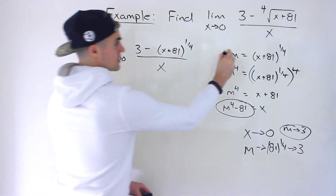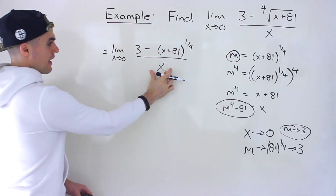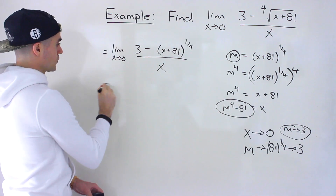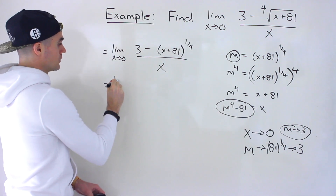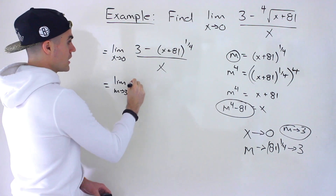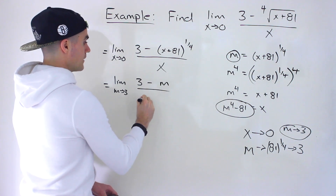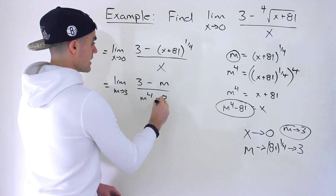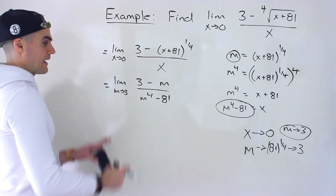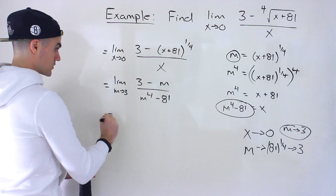We substitute that expression for x and the new limit bound. Substituting this for x and m for the 4th root expression, we end up with a new limit: the limit as m approaches 3 of 3 minus m, over m to the 4th minus 81. This becomes a nicer limit to deal with — we can handle it with factoring.